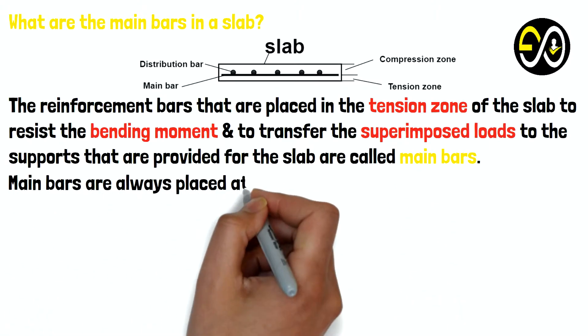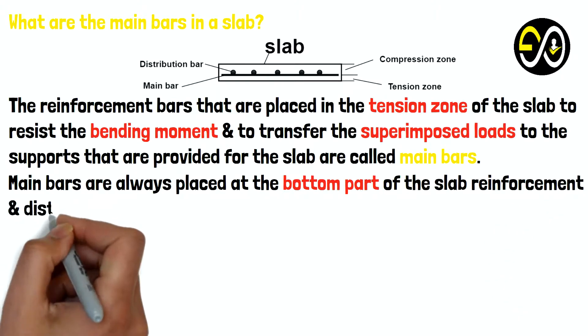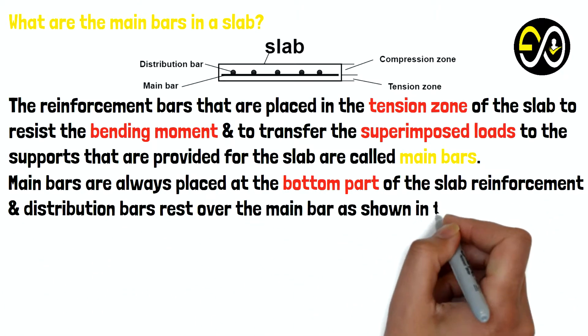Main bars are always placed at the bottom part of the slab reinforcement, and distribution bars rest over the main bar as shown in the above drawing.